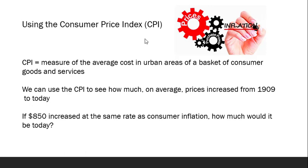Commonly, people use the Consumer Price Index, or CPI, to do this conversion. The CPI is a measure of the average cost in urban areas for a basket of consumer goods and services. We can use the CPI to see how much, on average, consumer prices rose from 1909 to today. We can then apply that increase — or inflate — the $850 into what it would be in today's dollars. In essence, we're finding if we took $850 in 1909 and increased it at the same rate as average inflation, how much would it be today?